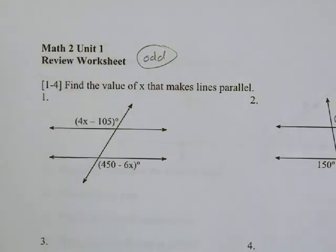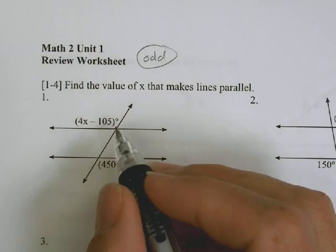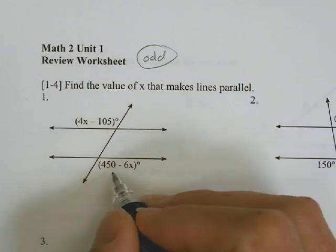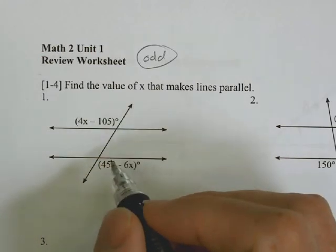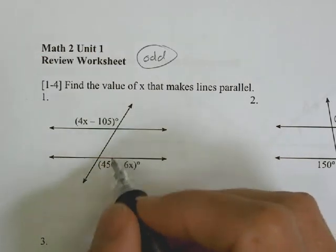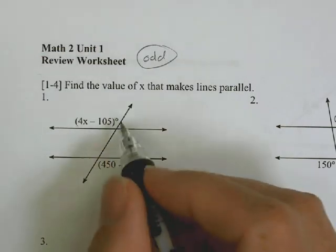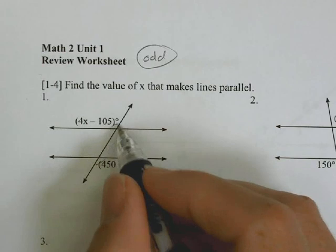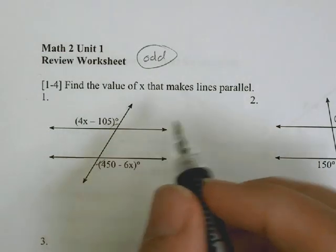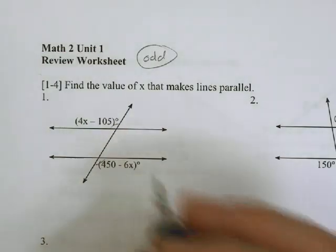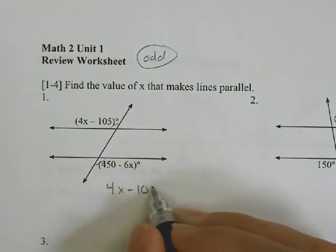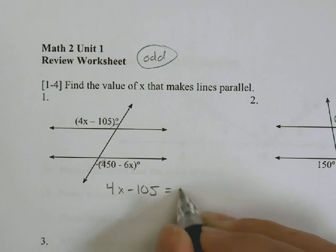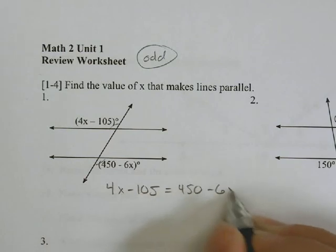Looking at number 1, we have 4x minus 105 degrees over here, and we have 450 minus 6x degrees over here. These two angles, because they are going to be on the outside of this line here, these two angles are actually equal to each other. They're going to be alternate exterior angles and they're equal.